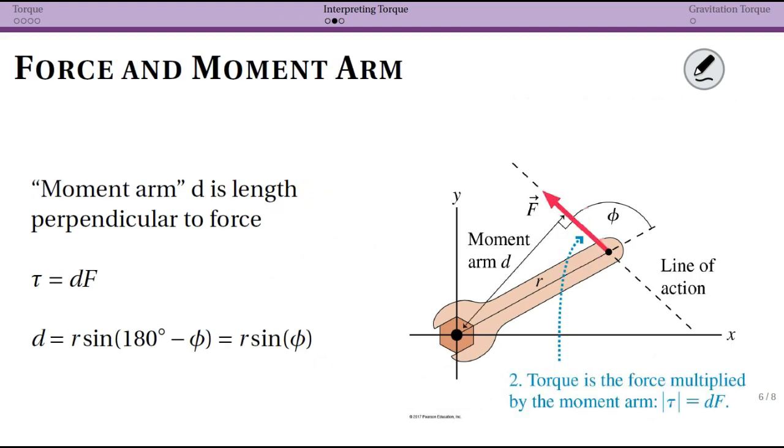So now we're going to look at a different interpretation of torque. In this case we're considering the entire force, but we're now looking at the moment arm, which here is labeled D. This is the length between the force and the axis, the hinge or point of rotation.